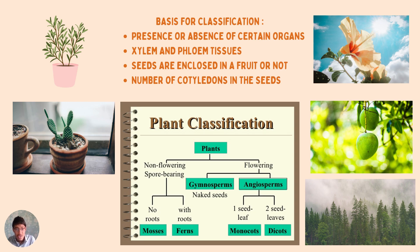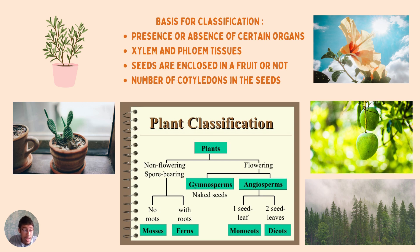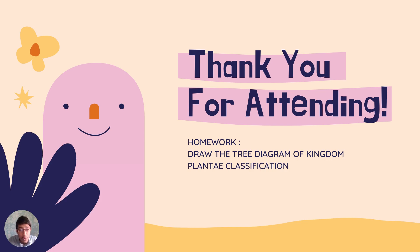Cryptogams are classified into three divisions: Thallophyta, Bryophyta, and Pteridophyta, which we will study in the next lecture. There is also a classification tree diagram in your textbook which you can refer to. Angiosperms are further classified as Monocots and Dicots, which we will cover in upcoming lectures.